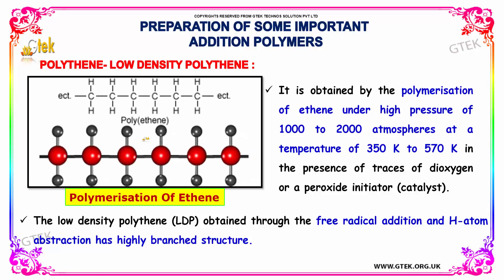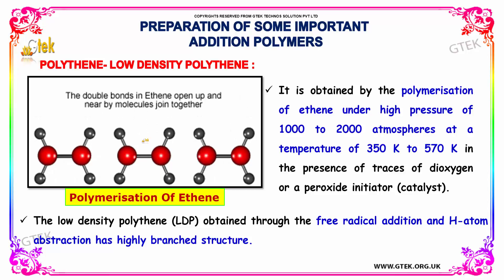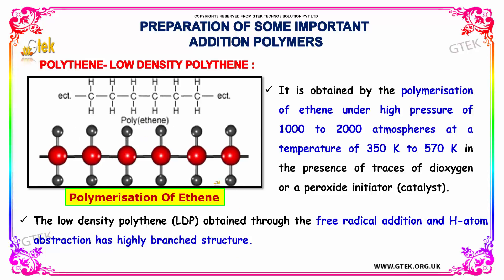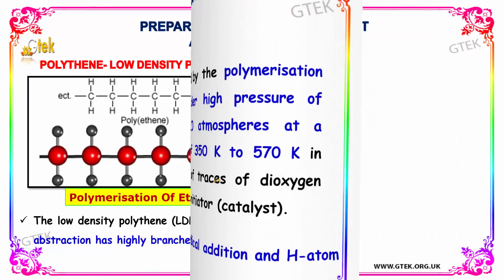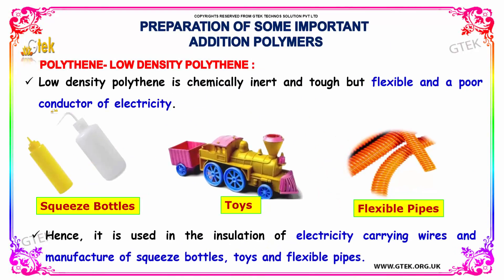The low density polythene is obtained through free radical addition and hydrogen atom abstraction, resulting in a highly branched structure. It is chemically inert and tough but flexible, and is a poor conductor of electricity.